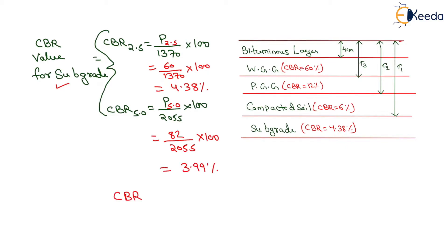The final CBR value equals the maximum of these two, which is 4.38%. So CBR = 4.38%. Here, T1 is the thickness above subgrade, T2 is the thickness above compacted soil, and T3 is the thickness above poorly graded gravel. We have to determine the values of T1, T2, and T3.